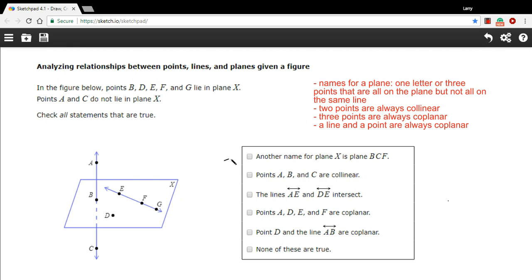The first one here says another name for plane X is plane BCF. And as this rule says up here, there are two ways to name a plane. You can just give it a letter, like they did here. They called it plane X. Usually you stick that letter in the corner.